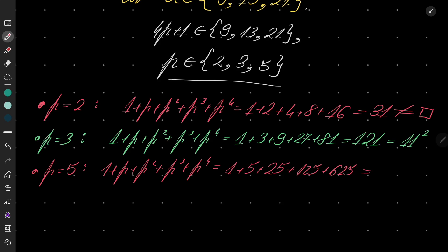And that is, complicated calculation. 750 plus 25 is 775, 780, 781. And if I'm not mistaken, this is also not a square of a number.